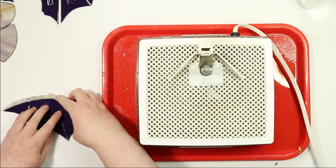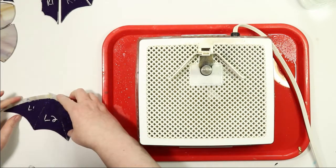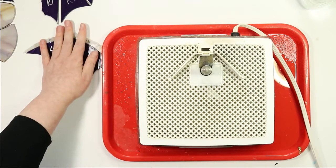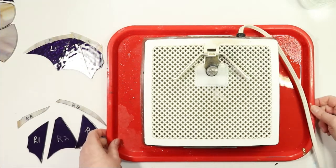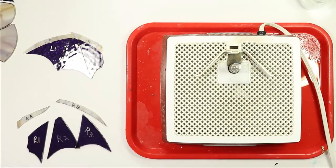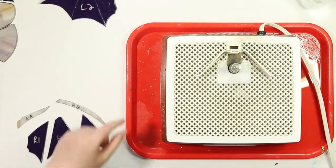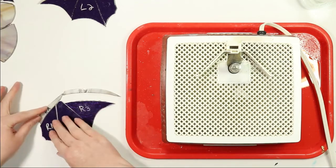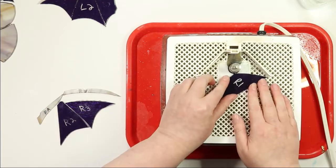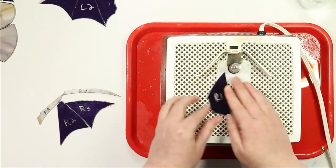So the one thing that I do want to say is that if I'm doing a suncatcher, I'm always a little bit more loose with what I'm doing in the sense that I don't feel like I always need a pattern template underneath the glass while I'm grinding it, simply because there aren't as many pieces typically.